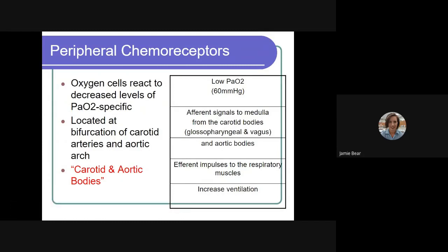Our peripheral chemoreceptors are specialized cells that react to low PaO2 or low oxygen level. And they're located at the bifurcation of the carotid arteries and the aortic arch. So what happens is when they sense a low PaO2, less than 60 millimeters of mercury in the blood, afferent or sensory signals will be sent to the medulla from the carotid bodies via both the glossopharyngeal and vagus nerve.